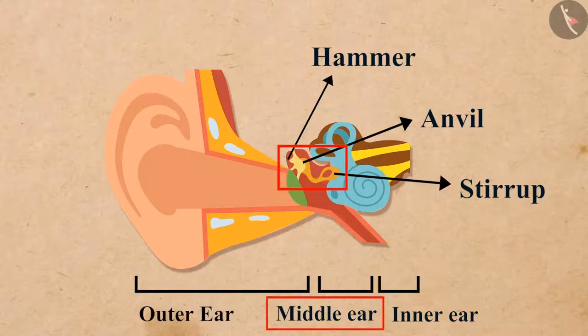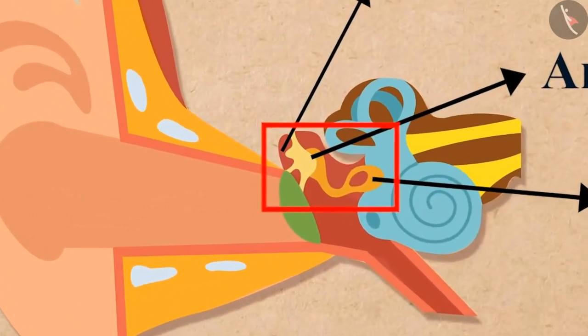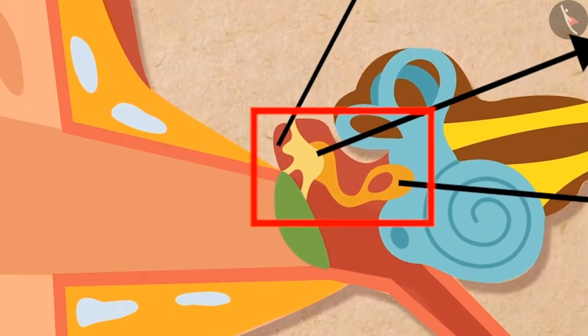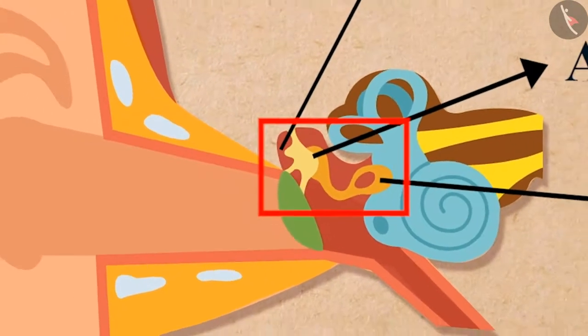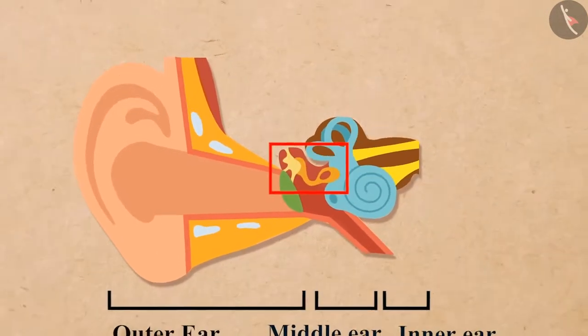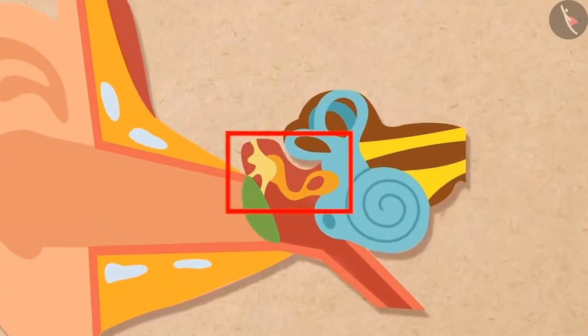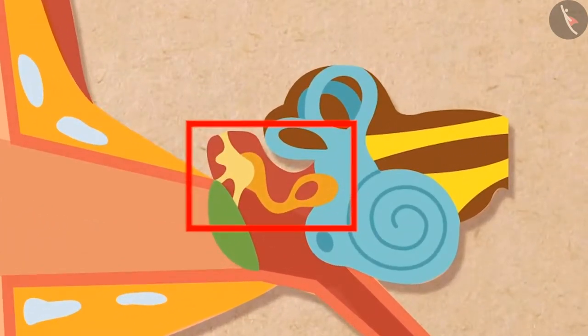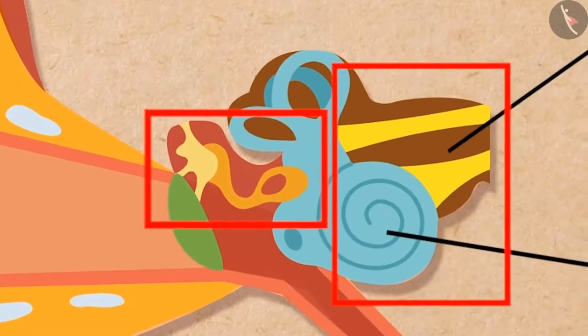Then the three bones—the hammer, the anvil, and the stirrup—of the middle ear amplify the vibrations. After that, the middle ear transmits the amplified pressure variations received from the sound wave to the inner ear.